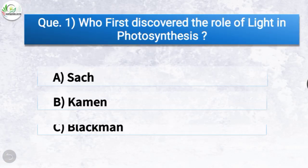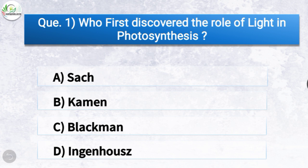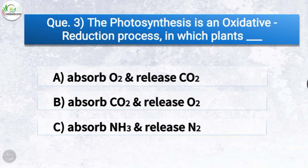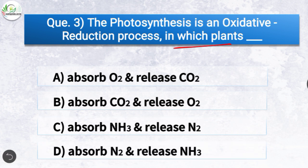Question 1: Who first discovered the role of light in photosynthesis? Options: Sack, Carmen, Blackman, or Ingen-Housz. The correct answer is option D, Ingen-Housz. Question 2: Who demonstrated that oxygen is given out in photosynthesis? Options: M. Carmen, Blackman, none, or Priestley. The correct answer is option A, M. Carmen. Question 3: In photosynthesis, plants do what? The correct answer is option B — absorb carbon dioxide and release oxygen. Plants absorb CO2 and release O2.